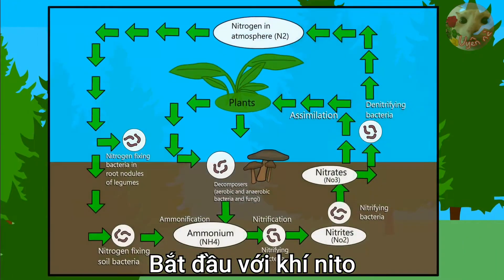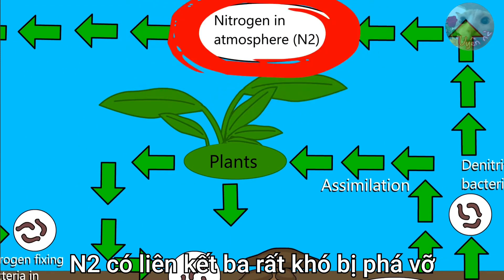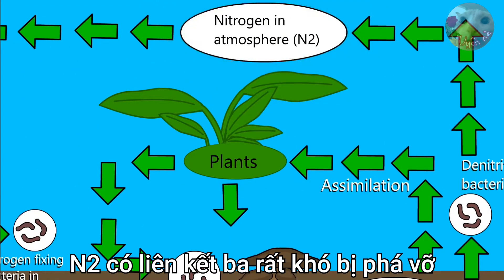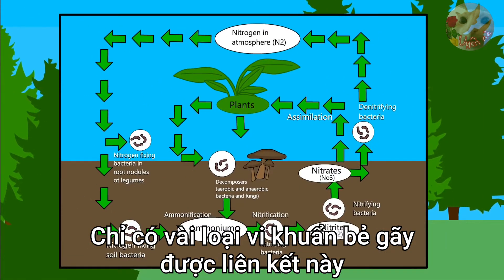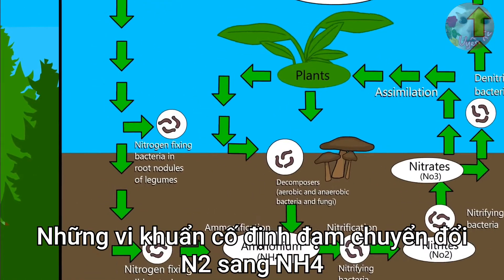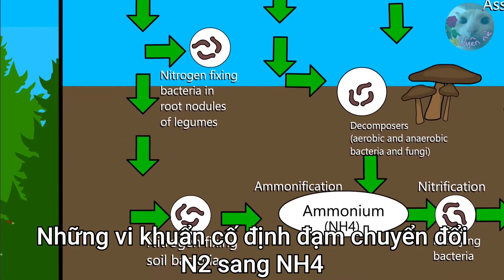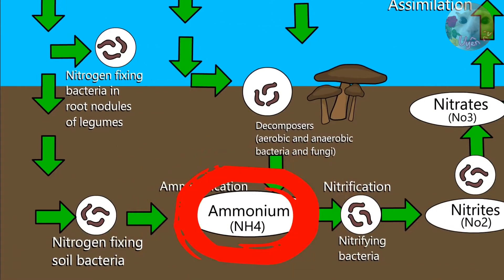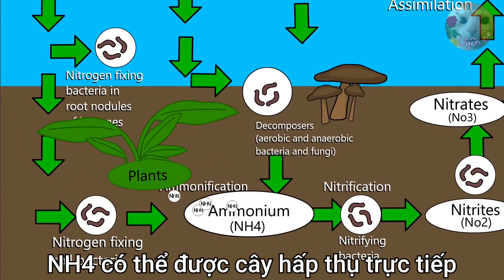We'll start with nitrogen gas. Nitrogen gas has a triple bond, so it's extremely hard to break. Only a few bacteria have figured out how to break it down. These nitrogen-fixing bacteria take the nitrogen gas and convert it into ammonia. Ammonia can just sit in the soil until it's ready to be absorbed by plants.